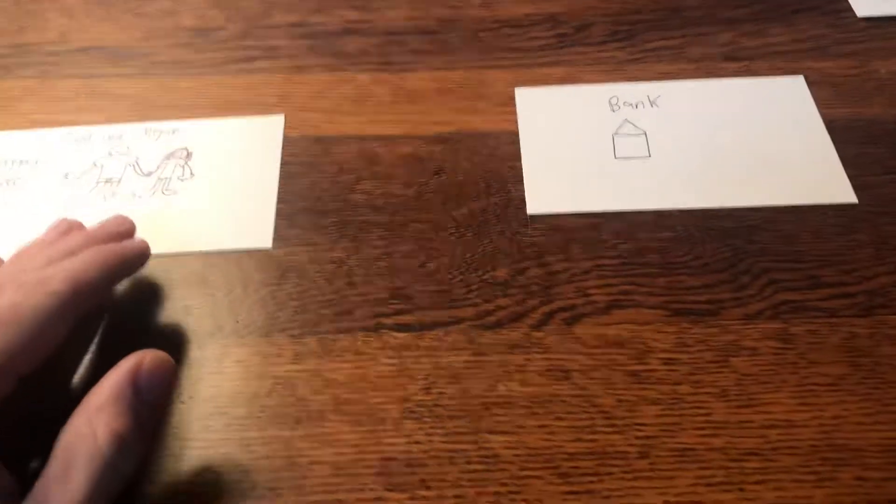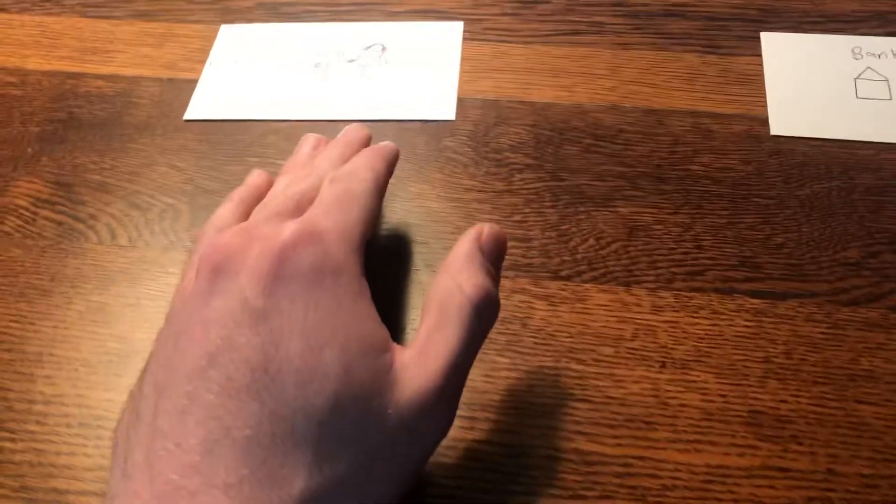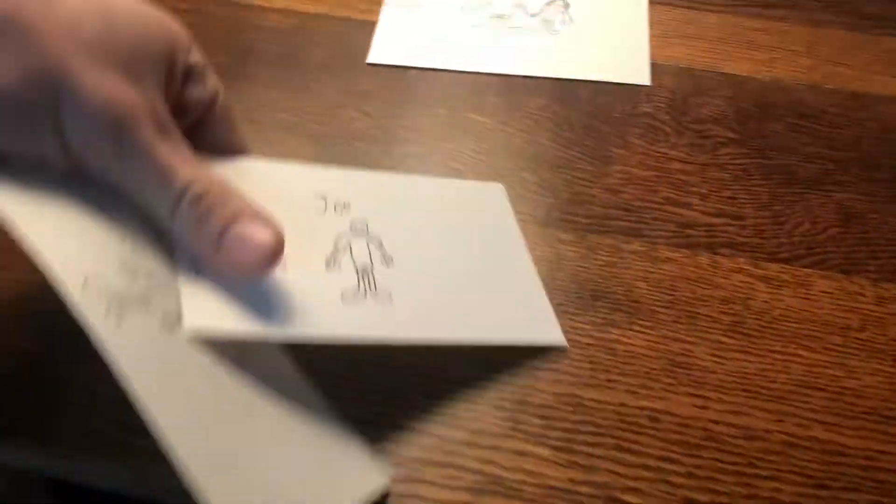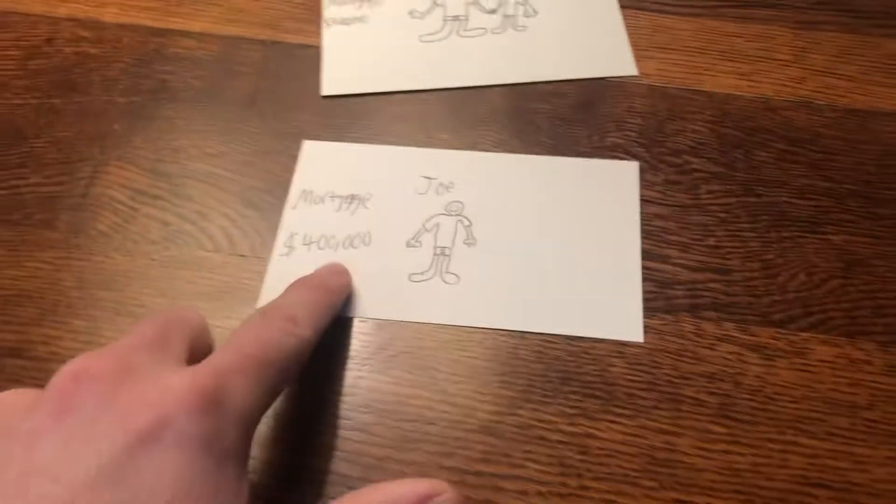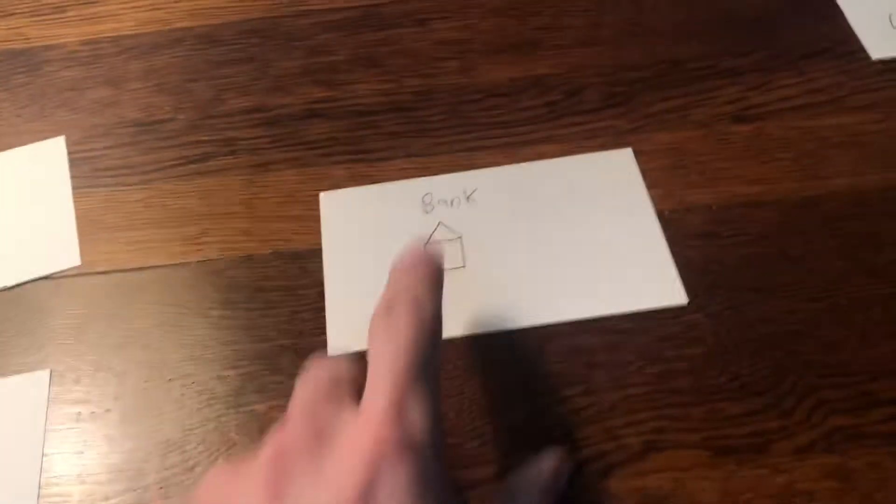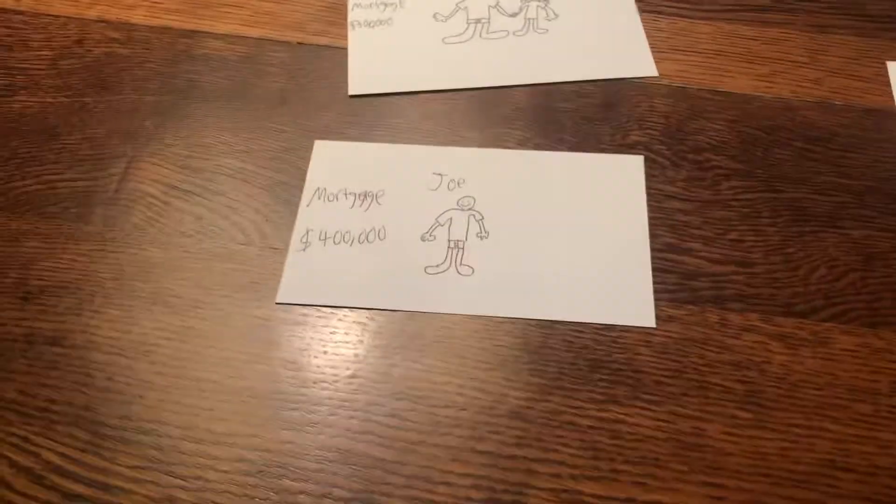With securitization, this process changed because these assets, this mortgage for example, is very illiquid. Eventually, Joe comes along and is interested in getting a mortgage for $400,000. The bank says yay, more money, and they give Joe the mortgage.